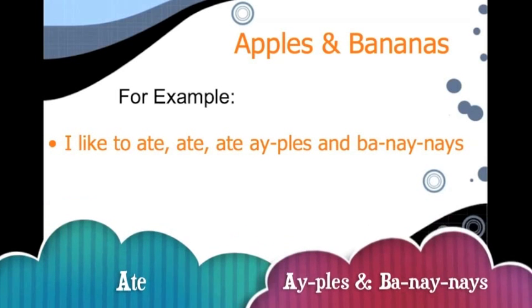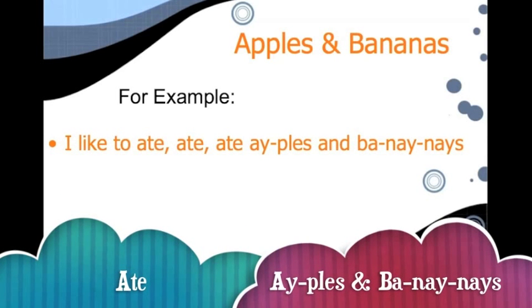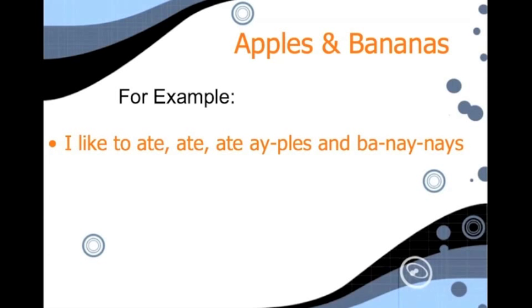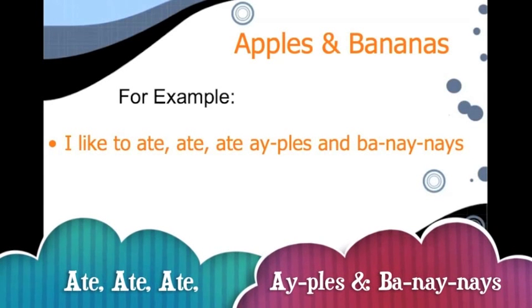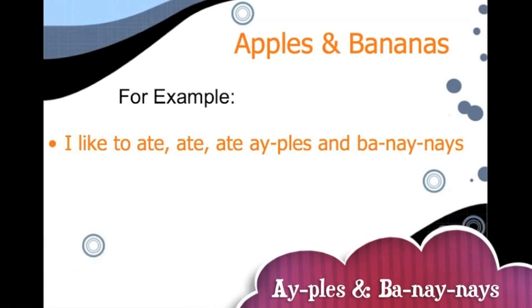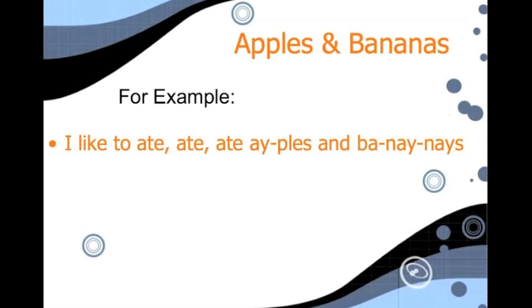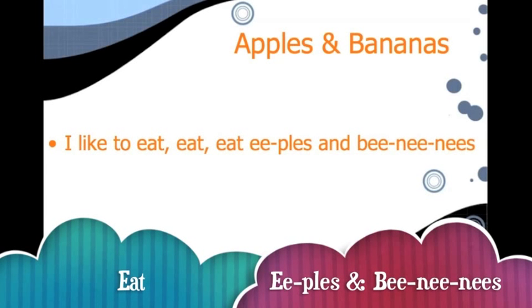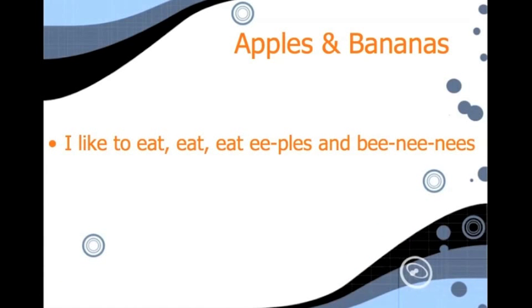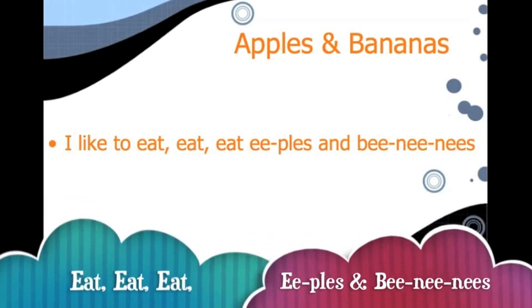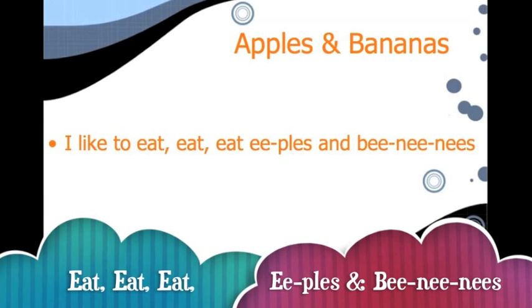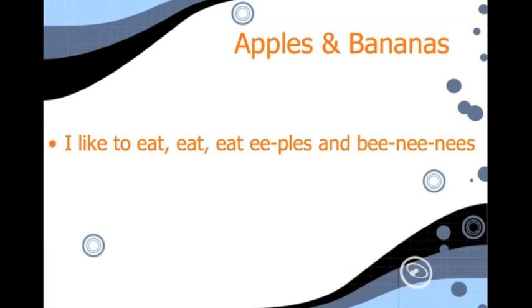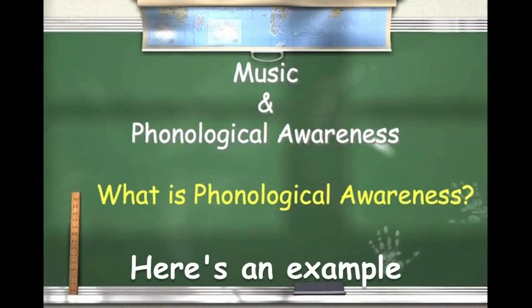The song Apples and Bananas helps children to distinguish between vowel sounds by replacing the vowel sounds with other vowel sounds. Music can also help young children to produce letter sounds, which helps them develop phonological awareness. This two-year-old is reciting the alphabet phonics song.